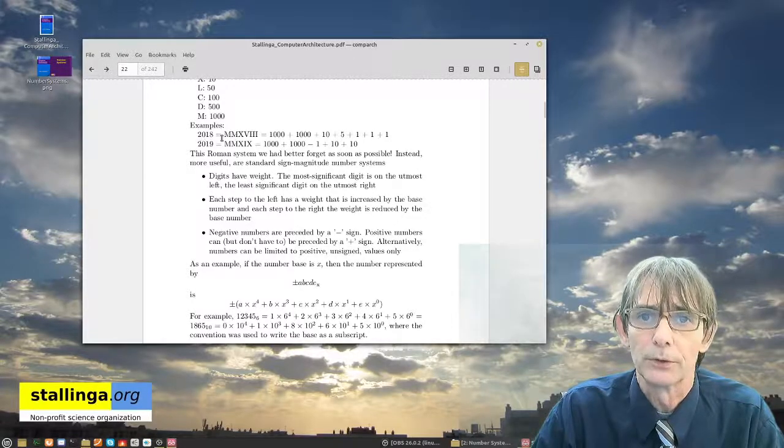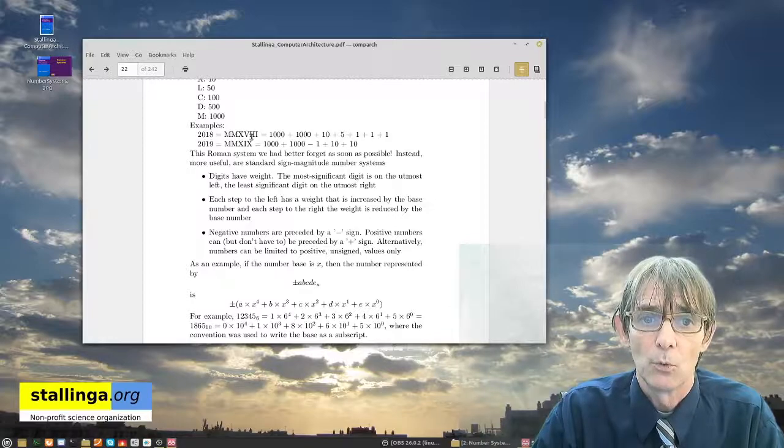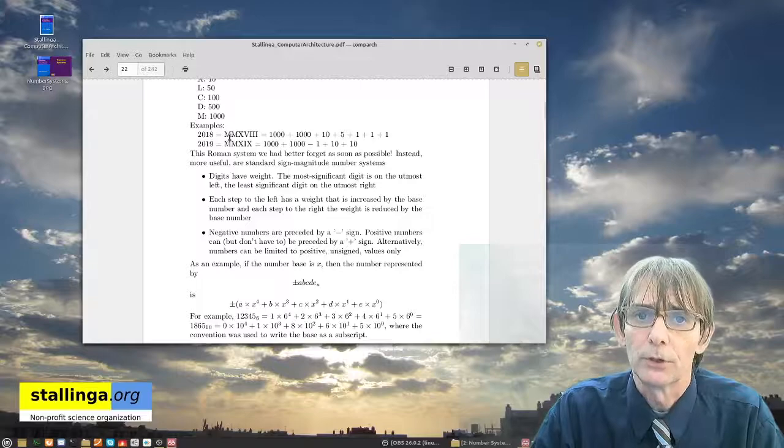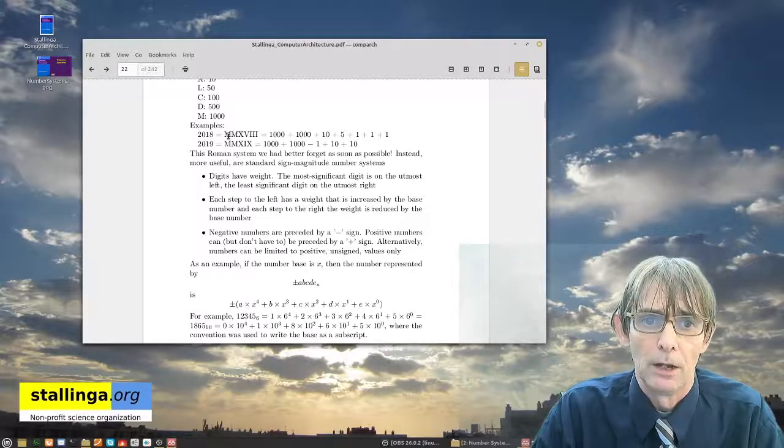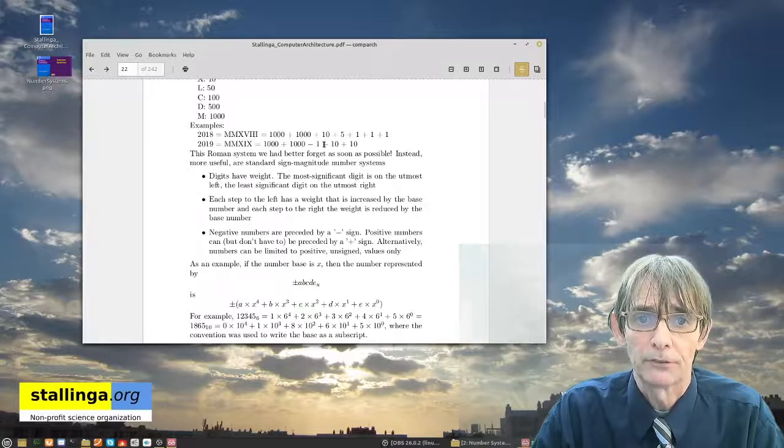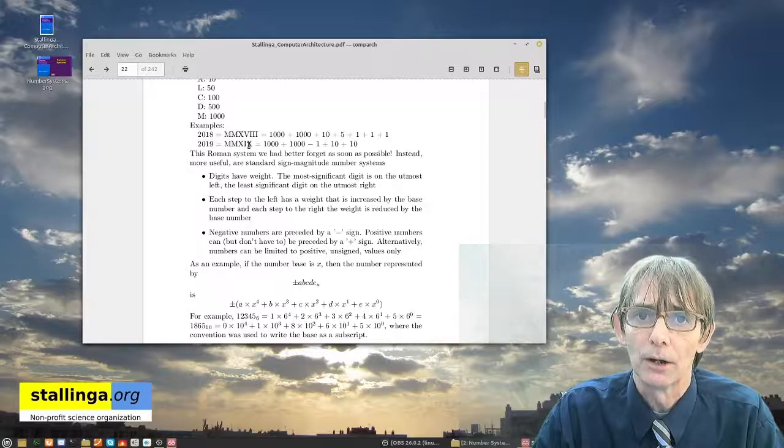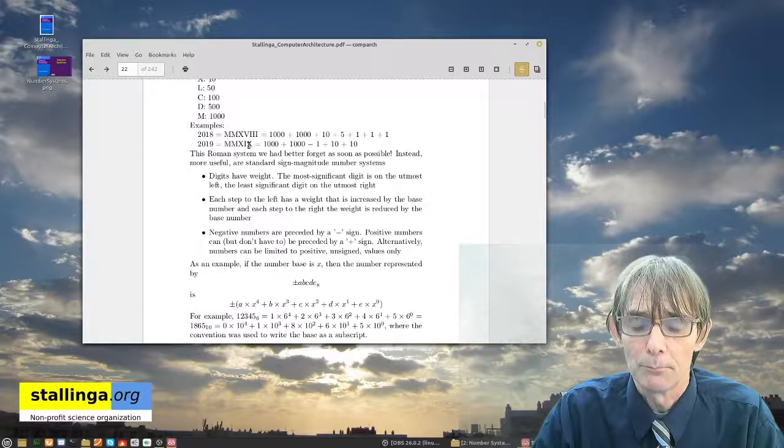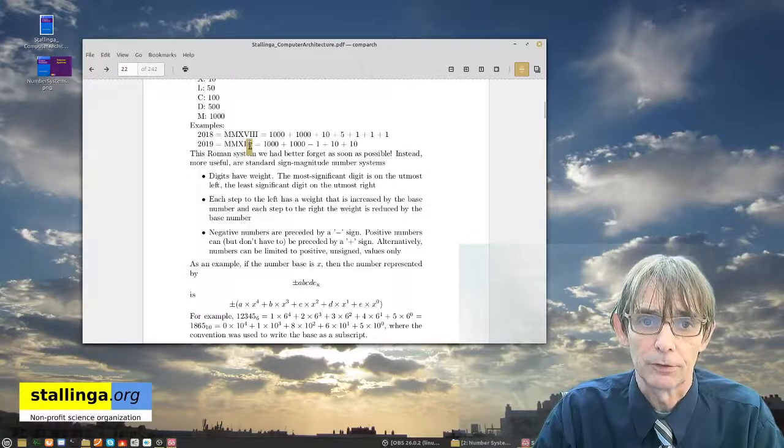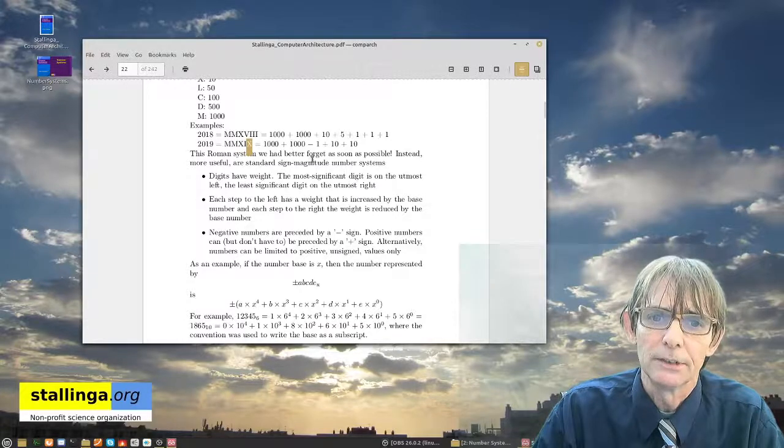But probably, you know, this system, for instance, 2018 would be written as MMXVIII and this MM represents thousands, so you have to do some kind of calculation. MM, 1000 plus 1000, plus 10, plus 5, plus 3. And if the I is standing before a larger value digit, then it is subtracted. So this I here is subtracted from the 10. Well, that's quite confusing, isn't it?